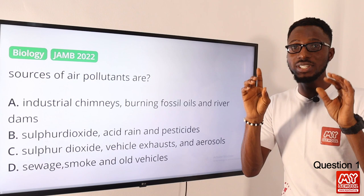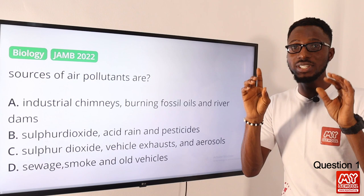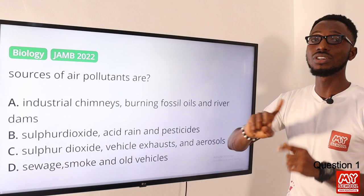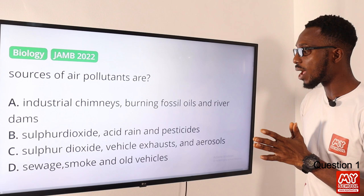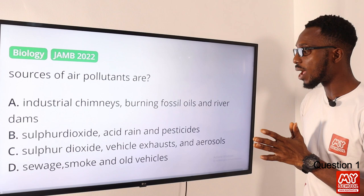Option B has sulfur dioxide, acid rain, and pesticide. Sulfur dioxide and pesticide are credible air pollutants; however, acid rain is just one of the aftermath effects when the air is polluted. So this disqualifies option B.